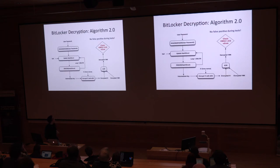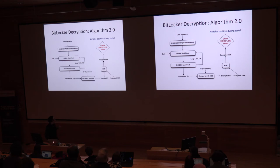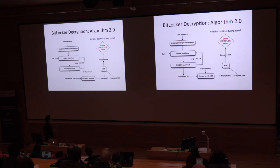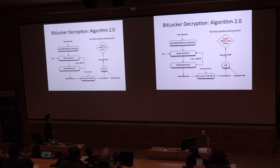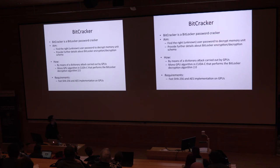Having this information, we can improve the previous algorithm. When we obtain the decrypted Volume Master Key, it's not necessary to make the MAC comparison. Because if the values of bytes 0, 1, 8, and 9 of the decrypted Volume Master Key are compliant with the BitLocker standard, then we are quite sure the input password was the right password. This is an empirical result, but I have made a lot of tests using different versions of Windows — 7, 8, 8.1 — and I never had any false positives. So I think it's a good improvement.